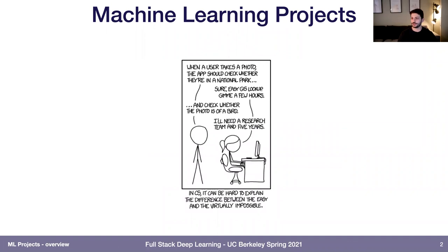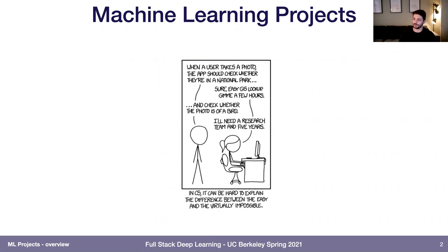This XKCD cartoon illustrates how hard it can be to articulate to someone outside of computer science what problems are still hard in CS — like why it should be so hard to recognize a photo of a bird. The funny thing is, this is now so comically out of date. For all of us who have spent time in the machine learning world, this is just one API call away. It articulates how difficult it can be to understand what problems are going to be challenging in machine learning.